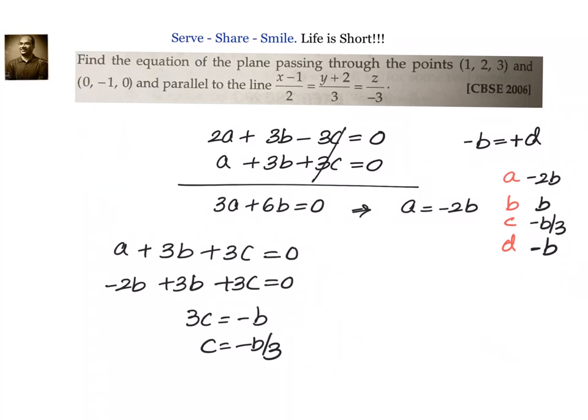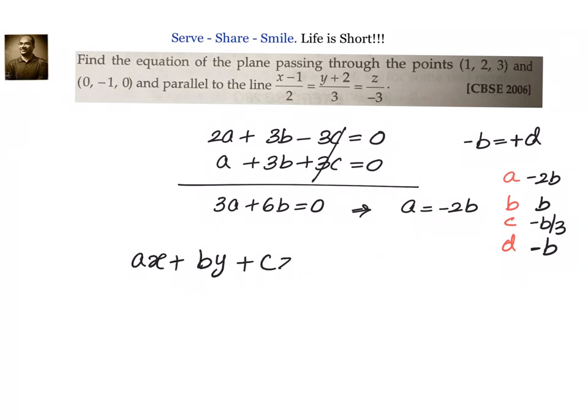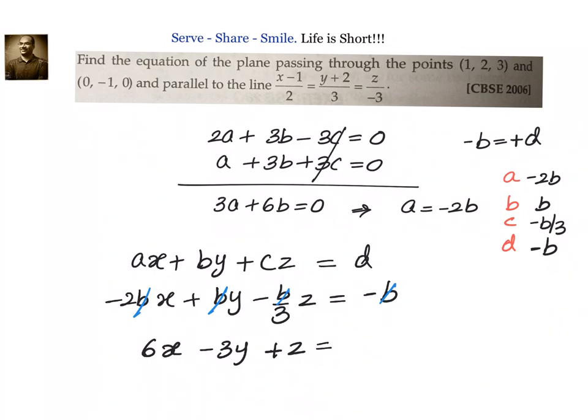Now, let us go to our plane and substitute these values. Our plane is ax + by + cz = d. a·x is -2b·x + b·y + c, that is -b/3·z = d, which equals -b. Now, we can cut b throughout and simplify this. Multiplying with -3, we will have 6x - 3y + z = 3. So, the equation of the plane is 6x - 3y + z = 3.